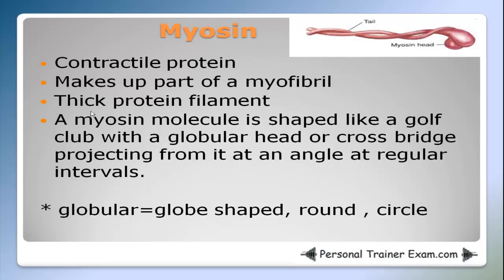Myosin. Myosin is a contractile protein and makes part of a myofibril. It's a thick protein filament. A myosin molecule is shaped like a golf club with a globular head or cross bridge projecting from it at an angle at regular intervals. Globular means globe-shaped or round. The myosin heads are globe-shaped, and another name for the globular heads is cross bridges.